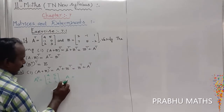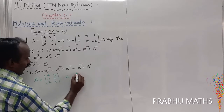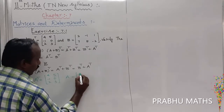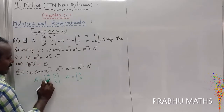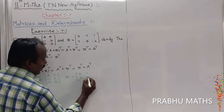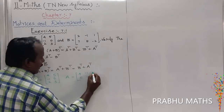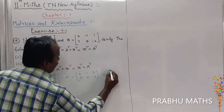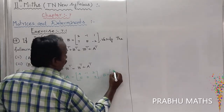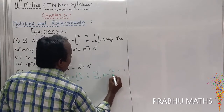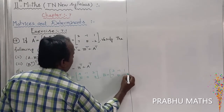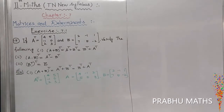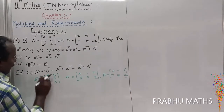The A matrix is found by interchanging rows and columns. So the first row interchanges to first column: 4, 5. Next, second row interchanges to second column: minus 1, 0. Next: 2, 3. That is the A matrix. The B matrix is given as: 2, minus 1, 1, 7, 5, minus 2.